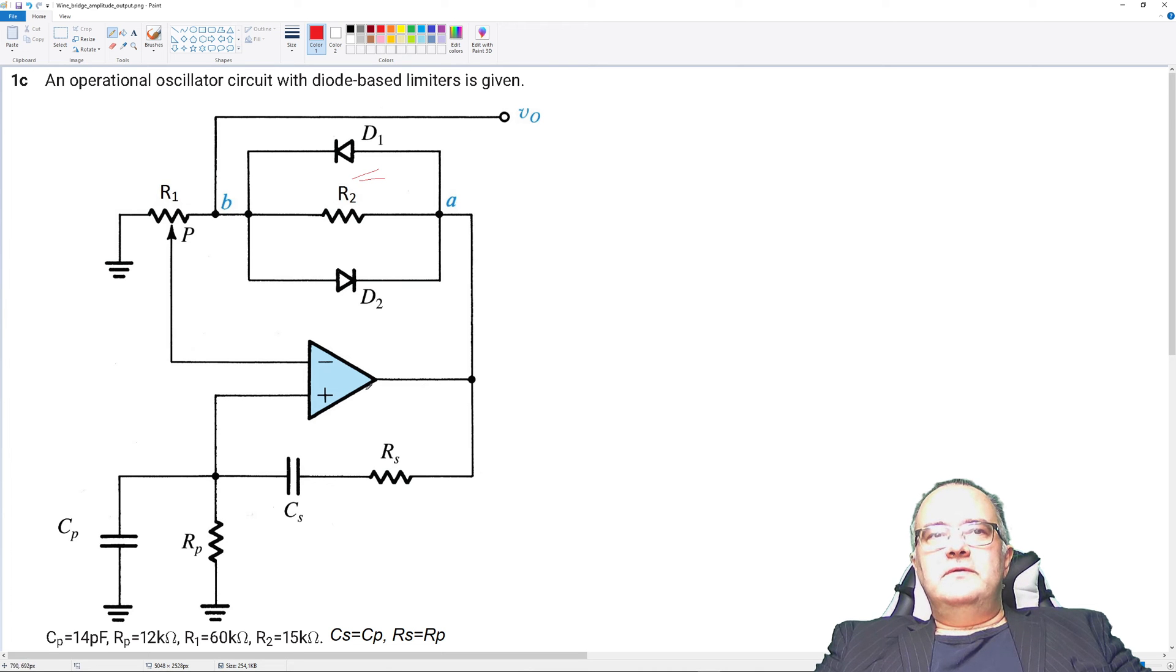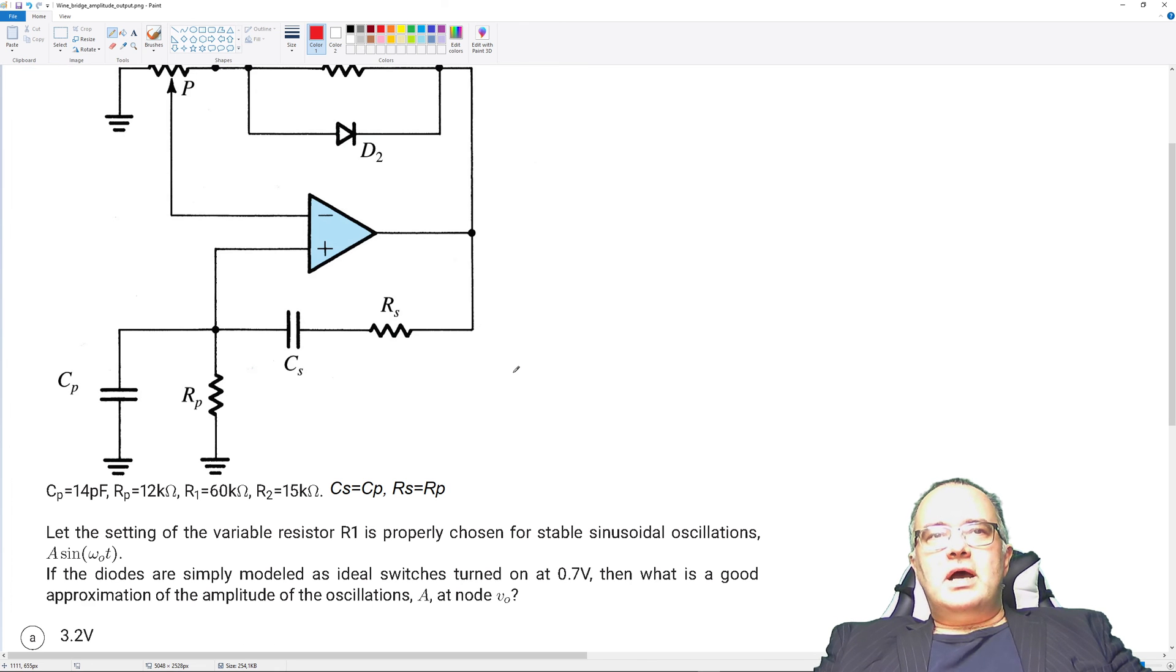Not Vb, Vout. The values of the components are given and the question asks us: let the setting of the variable resistor R1 is properly chosen for stable sinusoidal oscillations. If the diodes are simply modeled as ideal switches turned on at 0.7 volts, then what is a good approximation of the amplitude of the oscillations?